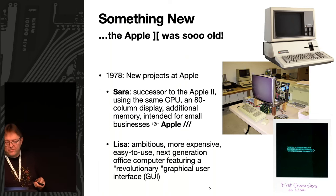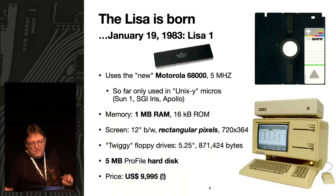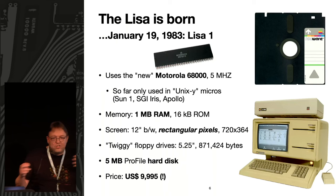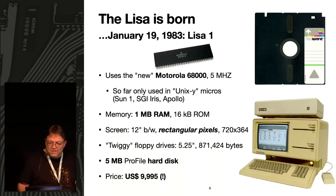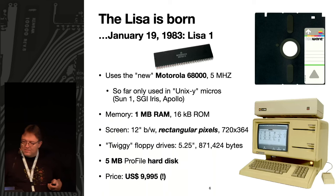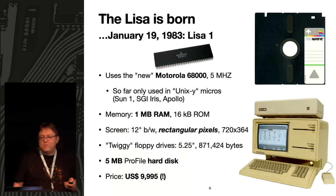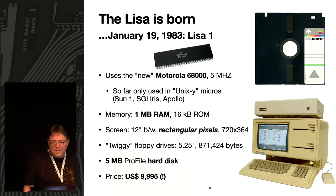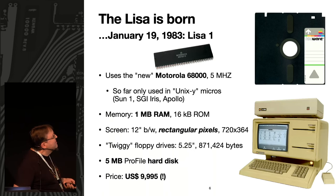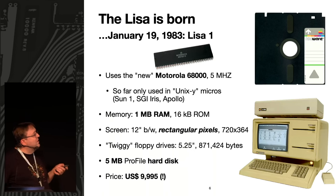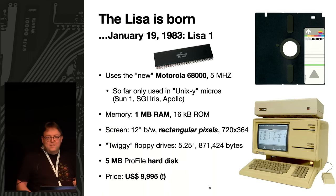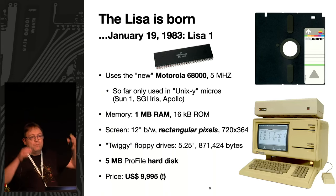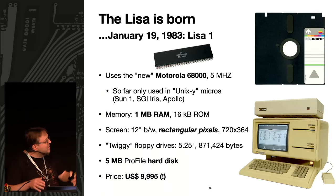After about five years of development with lots of changes and discussions, the Lisa was born. On January 19th, 1983, the first model — the Lisa 1 — was introduced, 40 years ago. It used the great new Motorola 68000 processor running at 5 MHz. That doesn't sound very convincing today, but back then this was the processor powering microcomputers used for multi-user Unix systems.